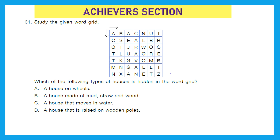Let's move to our Achievers section, which holds double marks for each question. Question 31: Study the word grid given below. Which of the following types of houses is hidden in the word grid? Option A is a house on wheels — that is a caravan. Option B is a house made of mud, straw and wood — that is a kacha house. Option C is a house that moves in water — that is a houseboat. Option D is a house raised on wooden poles — that is a stilt house. Searching the grid from left to right and top to bottom, I found caravan. So option A is the right answer — we have a house on wheels in the given word grid.